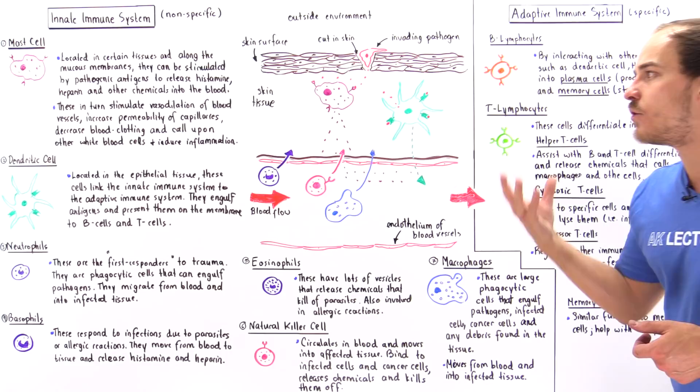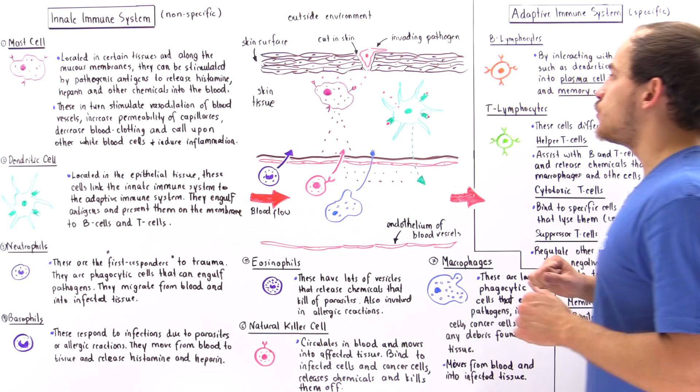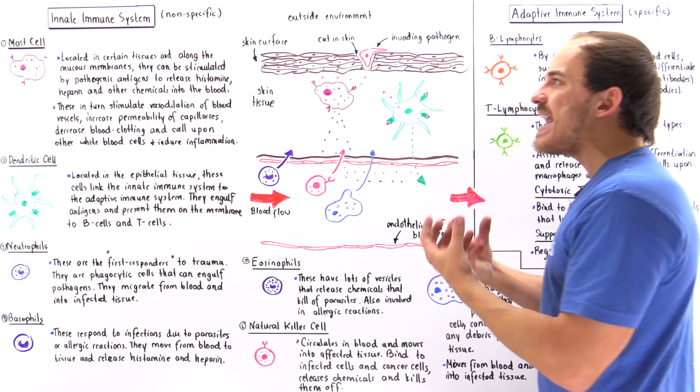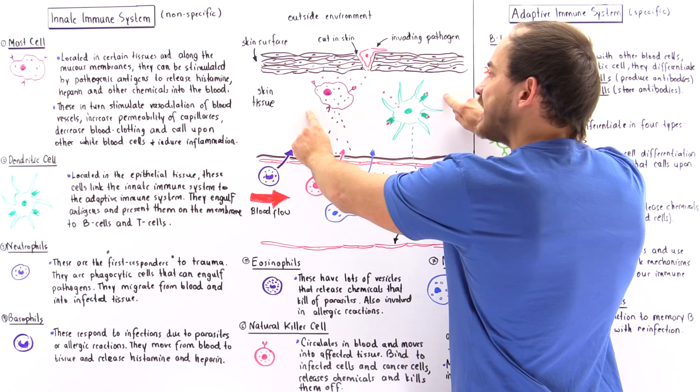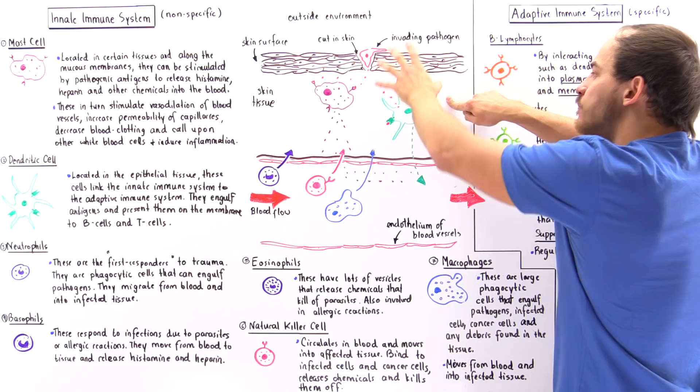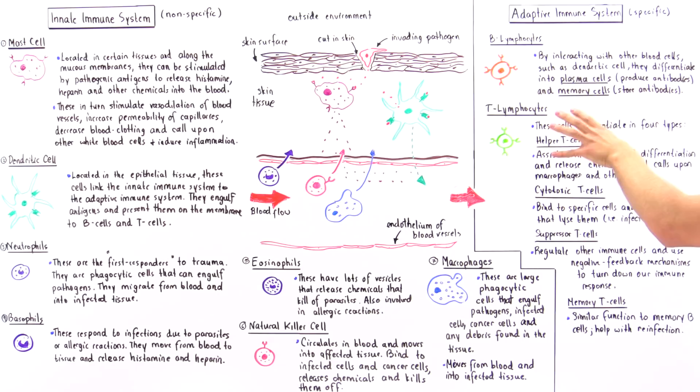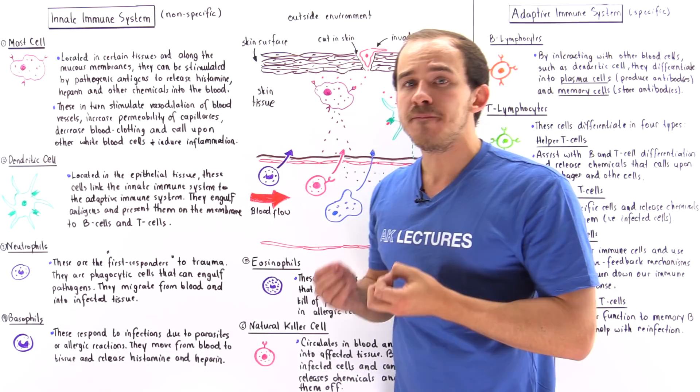So, these seven cells we just described are the major cells that are non-specific and part of the innate immune system. Two of these cells — the mast cell and the dendritic cell — are usually found within our skin tissue. But it is the dendritic cell that moves into the blood and carries antigens to the adaptive immune system, to the white blood cells found in our lymph nodes and lymph system.